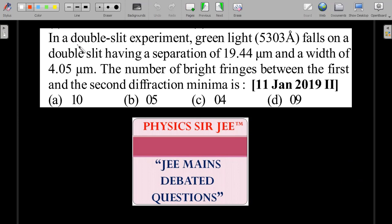So here I go with the formal reading. In a double slit experiment, green light of 5303 angstroms falls on a double slit having a separation of 19.44 micrometers and a width of 4.05 micrometers. The number of bright fringes between the first and the second diffraction minima is given four options; you are supposed to choose one among them.